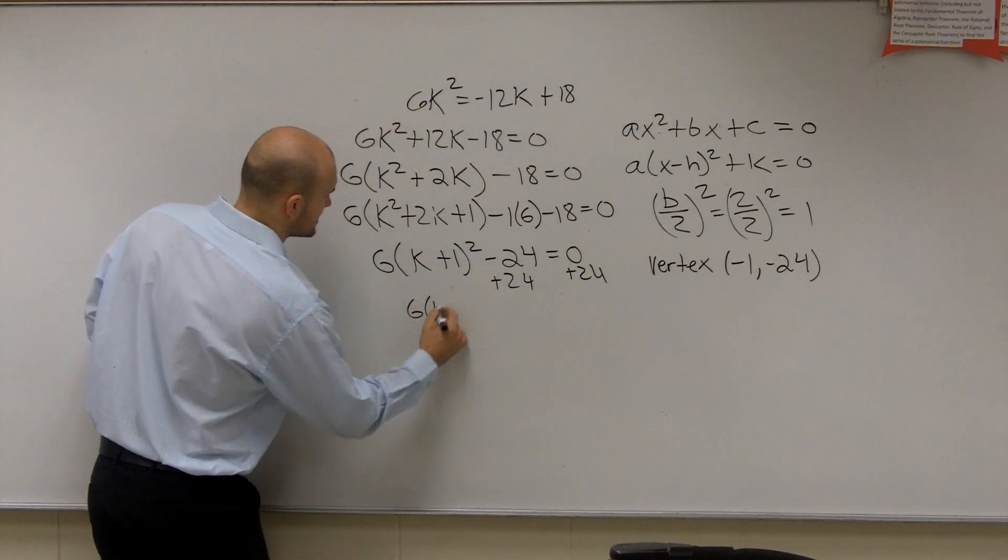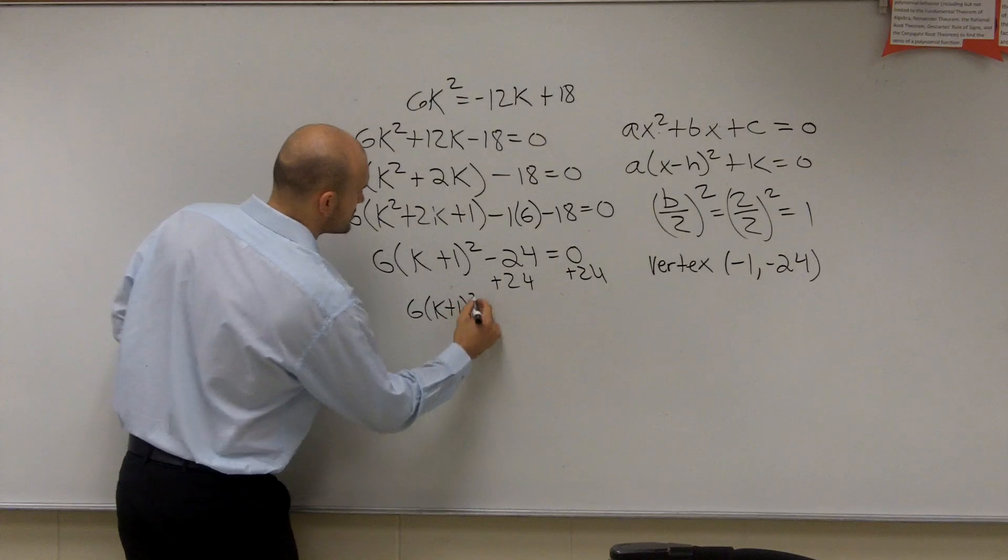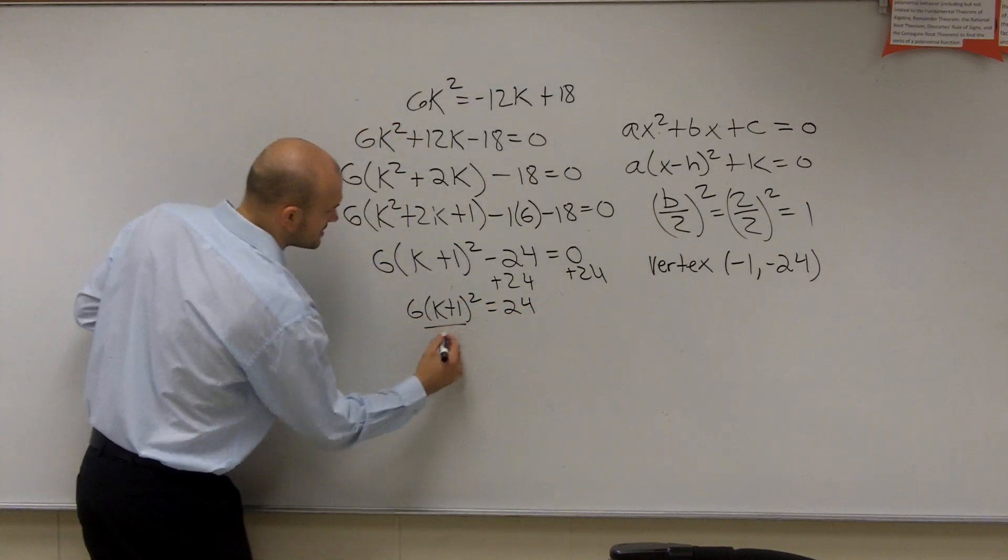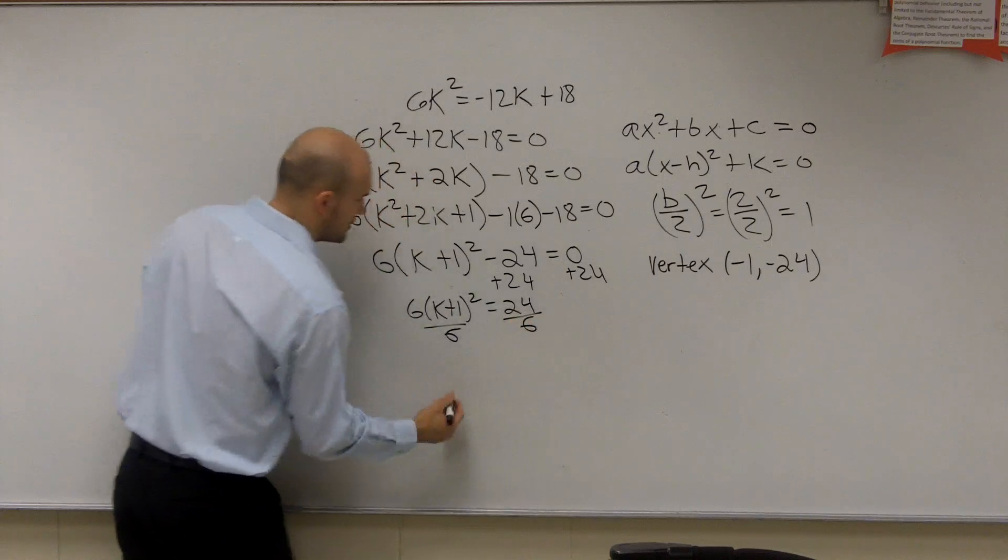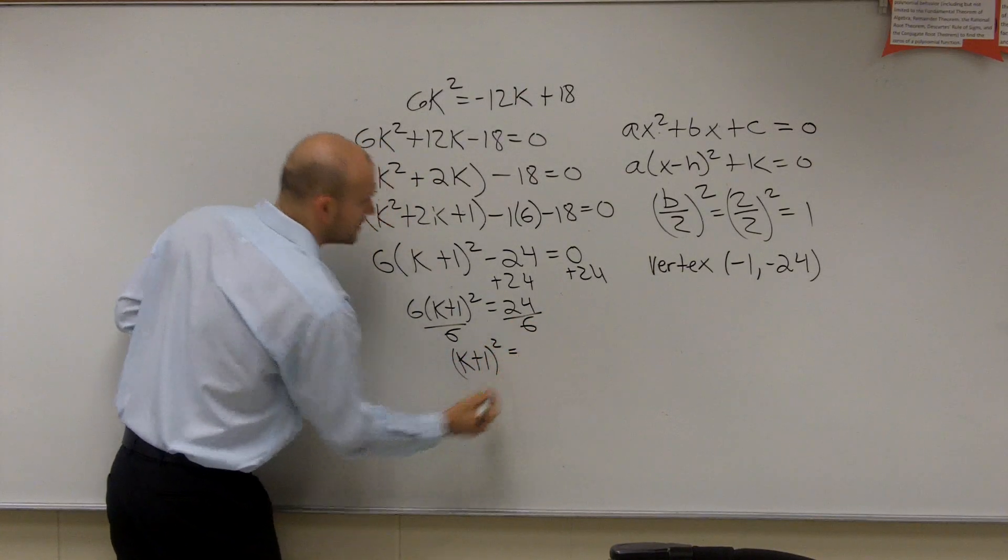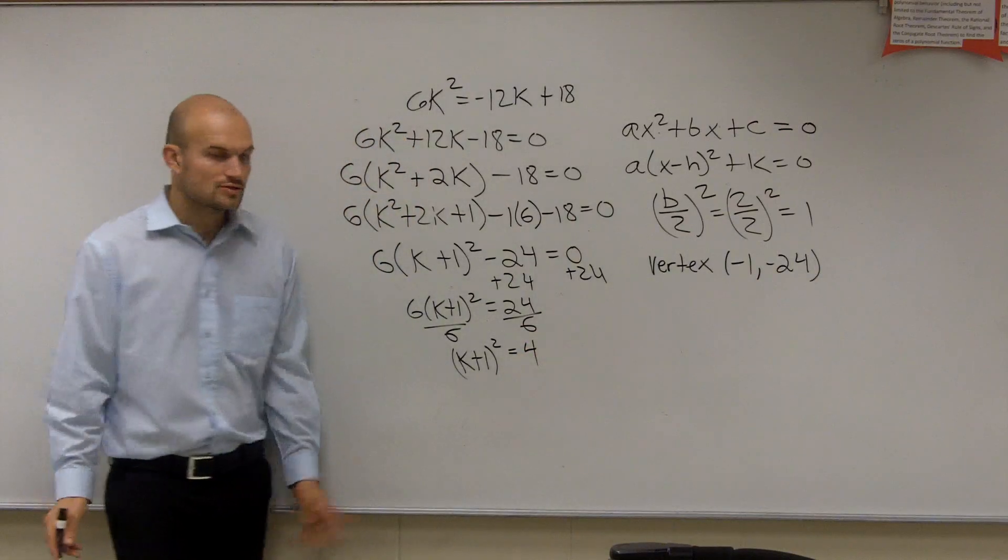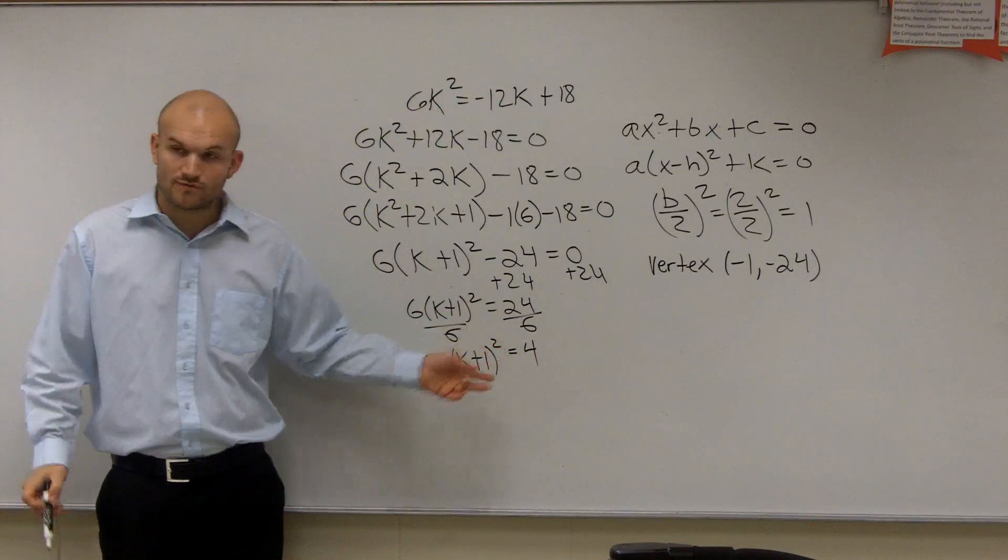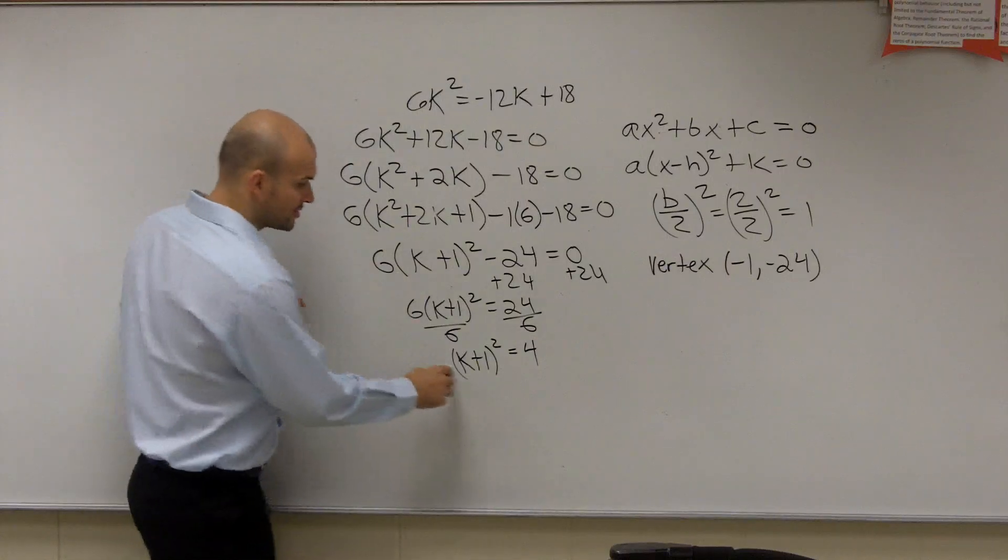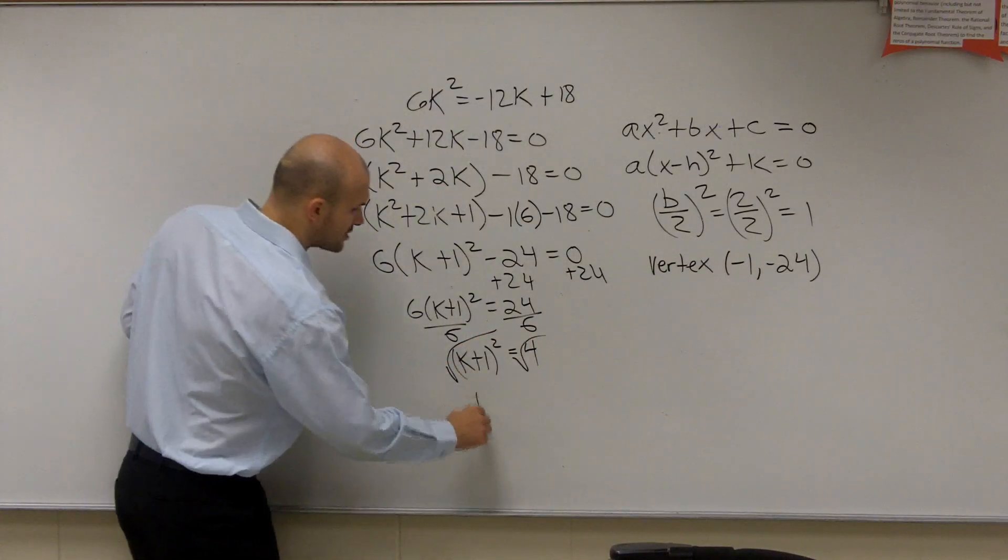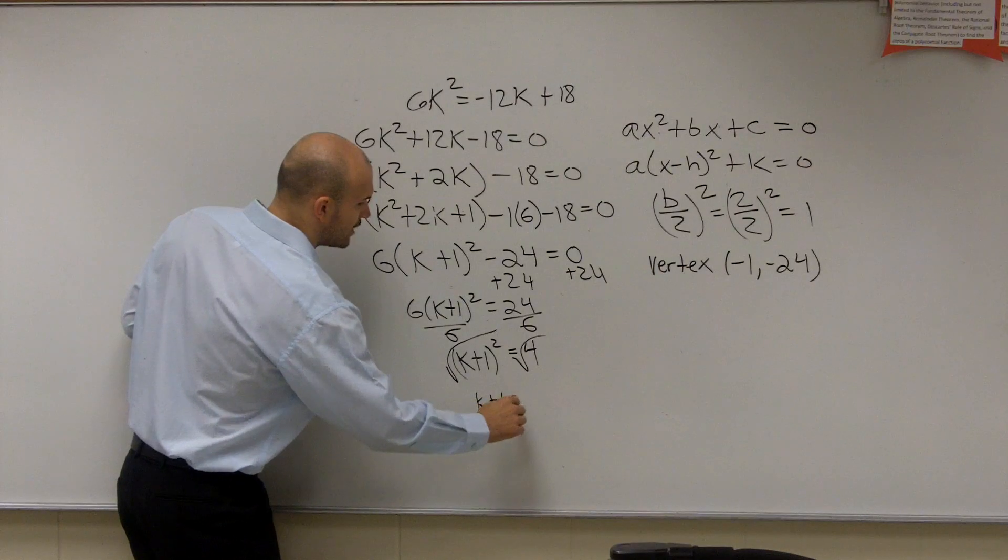And 24, I get 6k plus 1 squared equals 24. Now undo division by 6. So I have k plus 1 squared equals 24 divided by 6 is 4. So now you can see I have the expression k plus 1 squared equals 4. To undo that, you're going to have to square root. So we're using all of our inverse operations.